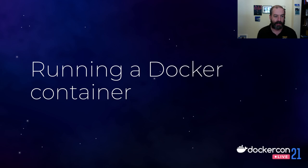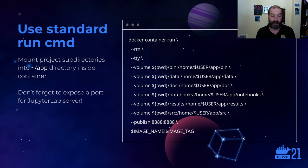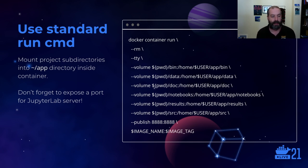After building the image, we can run a container using a standard run command. We typically have a bunch of volumes outside the container containing things like application source code, a folder for intermediate results, notebooks, data, and executable shell scripts. We also need to publish a port since the Jupyter server runs on a particular port.